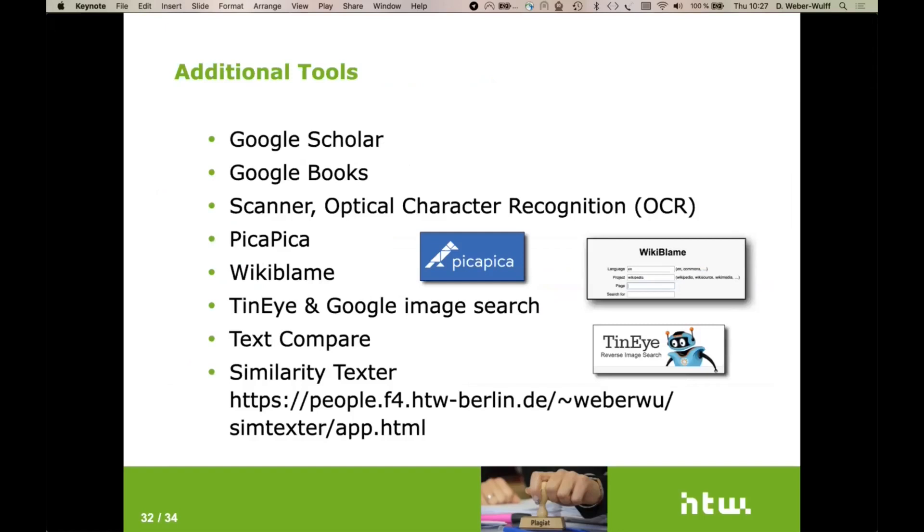We use a lot of additional tools at Vroni Plag Wiki. Google Scholar and Google Books are not usually included in the Google searches. So it can be useful to look up the references in Google Scholar, and that may help you find the source for the information. One can use scanners and optical character recognition to extract the text from publications that are only in print. There's a German system called Pika Pika that examines text only with the Wikipedia, but they do look at various languages Wikipedia. There's a rather difficult to use, but rather effective system called Wiki Blame that tries to find the exact version of Wikipedia in which a special wording of a sentence was found so that you can get a pretty good idea of about when this plagiarism was taken from the Wikipedia.